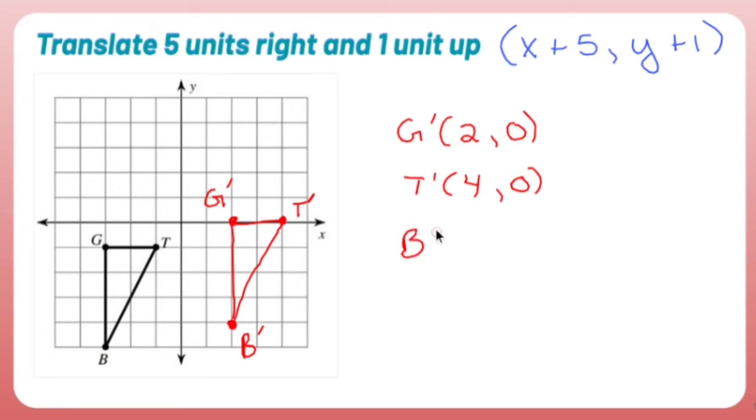And B prime has me starting at the origin, go right two, go down four. So right two, down four is (2, -4). And those are the points of my image. So again, translating says let's just move a shape, don't do anything fancy. When I'm done, if you have to list out the points, there they are. Pretty simple.